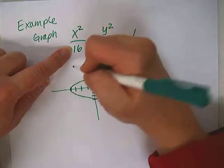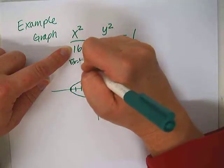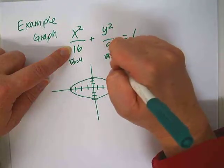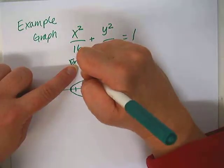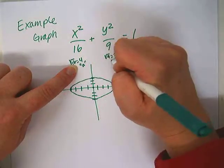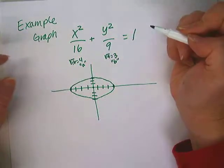So since this is a 16, the square root of 16 is 4. The square root of 9 is 3. So technically, this one we would call A, and this one we would call B.